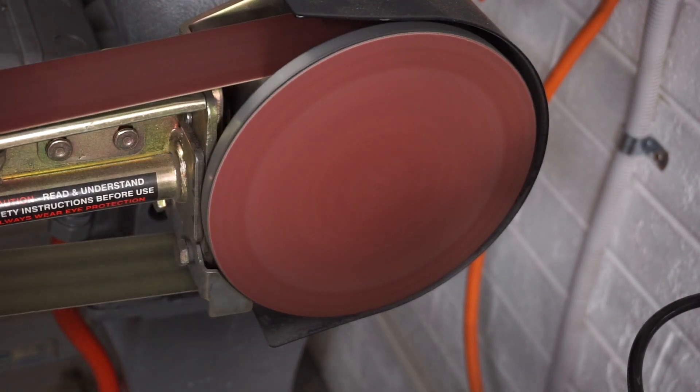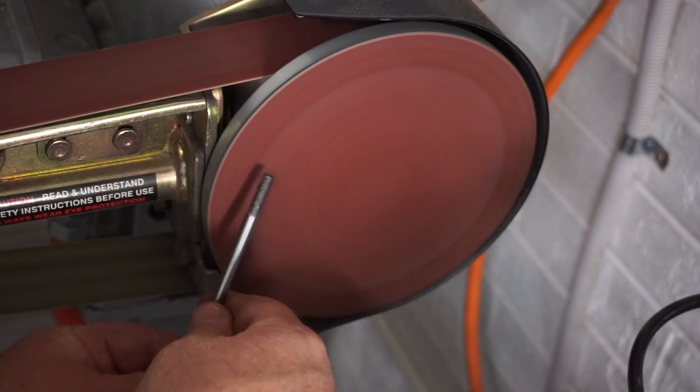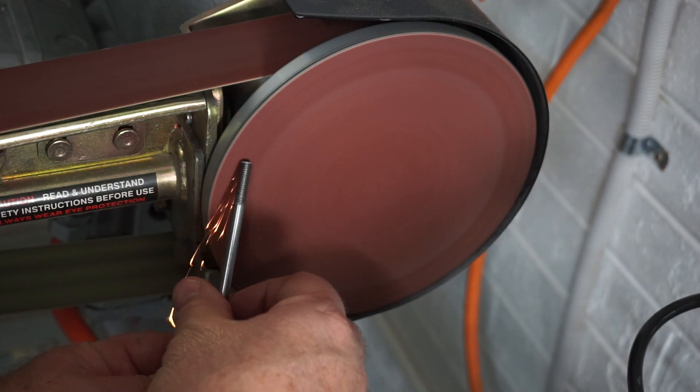Back once again on the linisher, just on that disc sander there. Give it a little bit of a tickle, put a slight taper on it so I've got a lead in. And it's all done guys. There it is there.